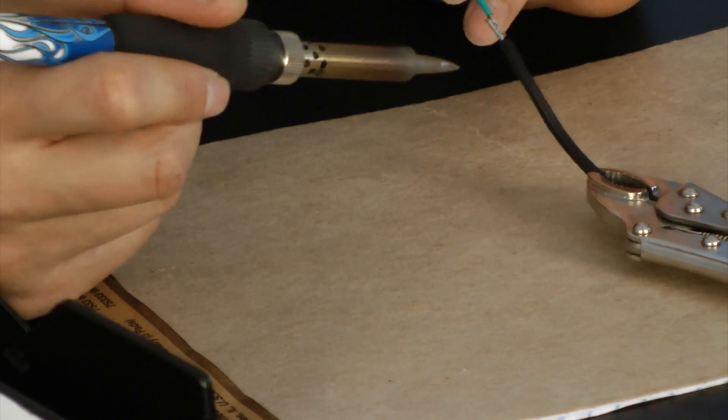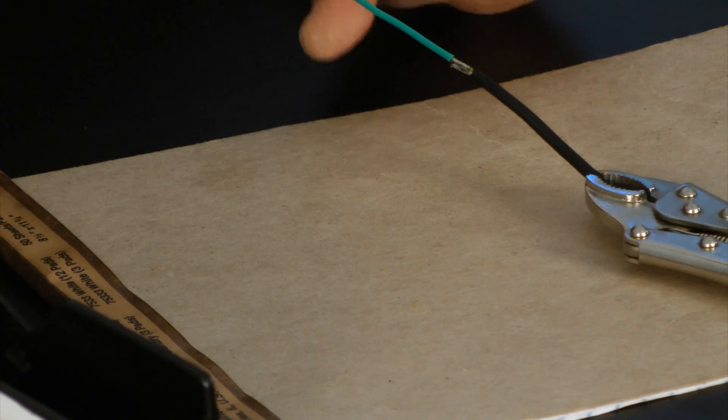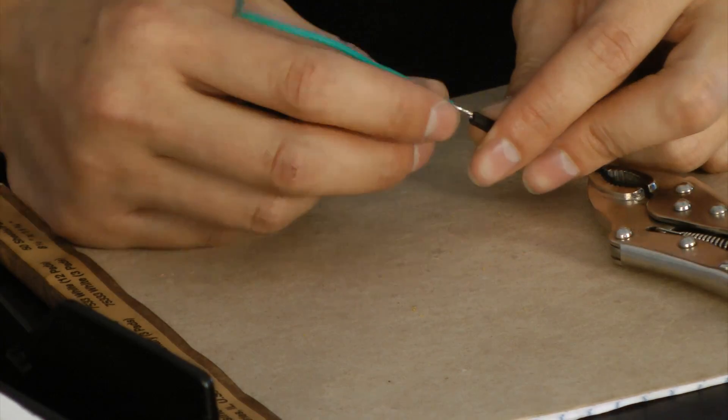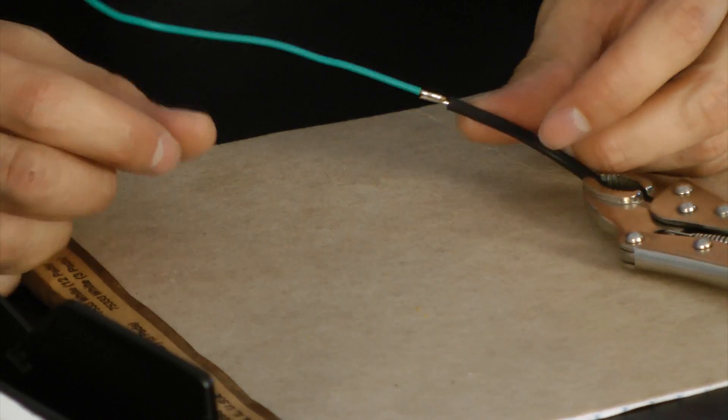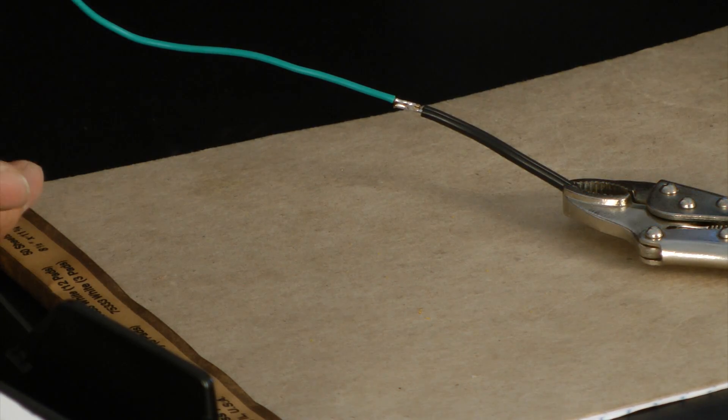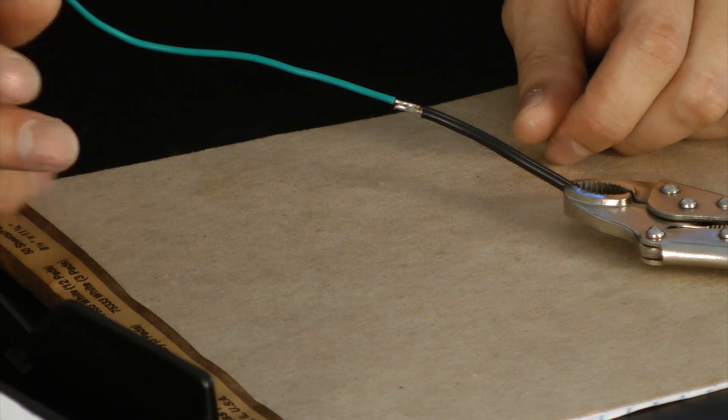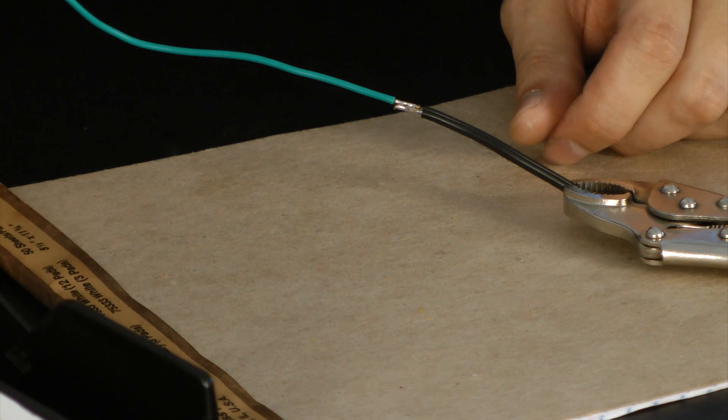Again, you don't want the iron against the wires for too long. Two to three seconds should be sufficient. If you're finding that you have to hold the iron against your surface for longer than that, I would suggest going to a more powerful iron, or one that can reach a higher temperature.